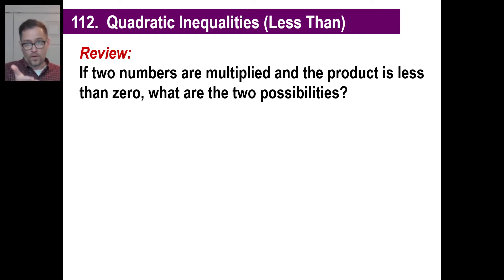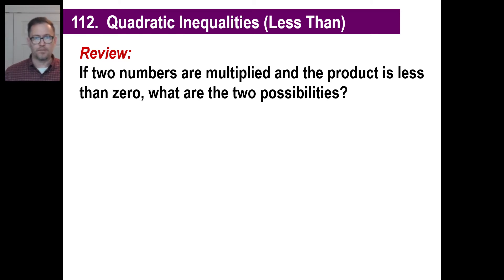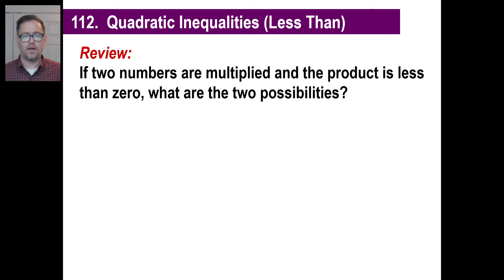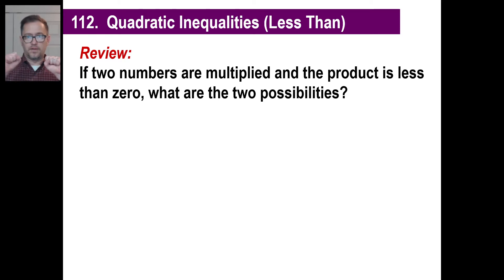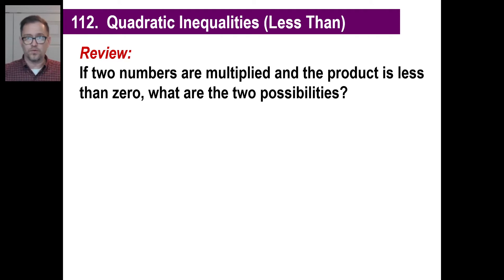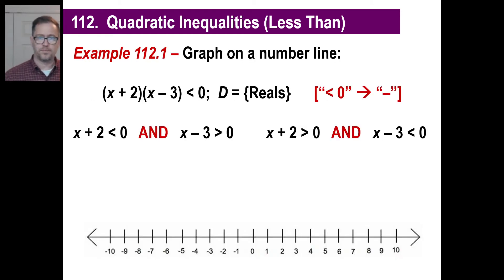Now we're going to do less than. The question is: we have two numbers that are multiplied and the product is less than zero — in other words, negative. What are the two possibilities? Either you have one number that's negative and the other positive, or one that's positive and the other negative. That's what we're going to set these equal to. So it's a real short lesson.